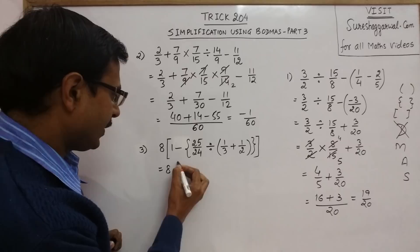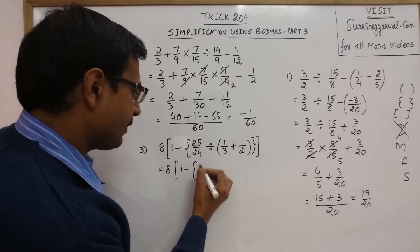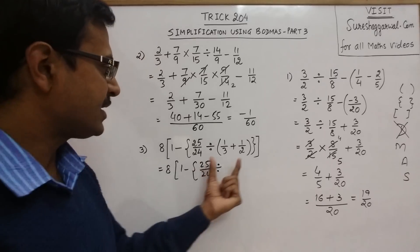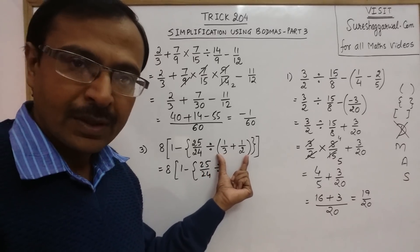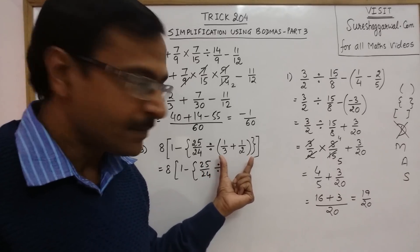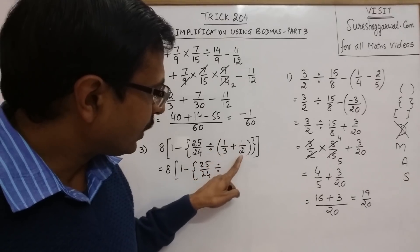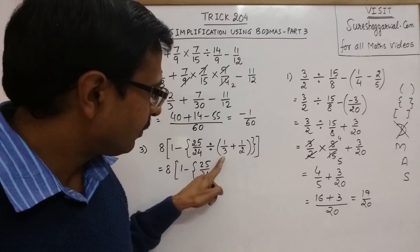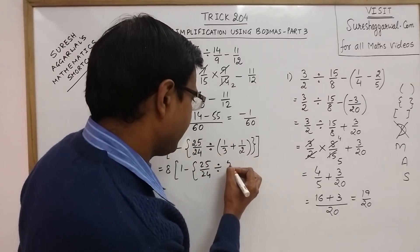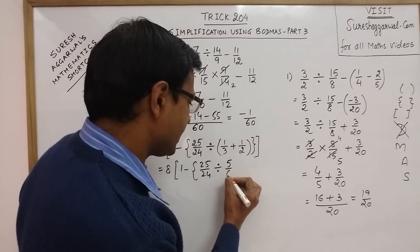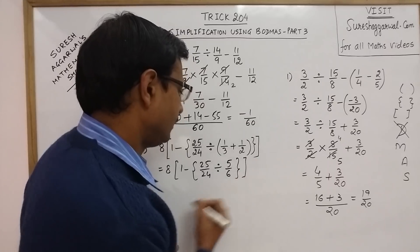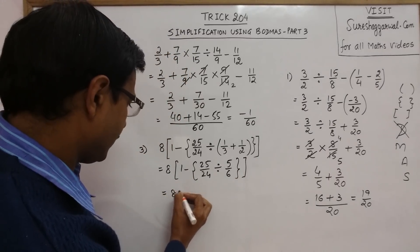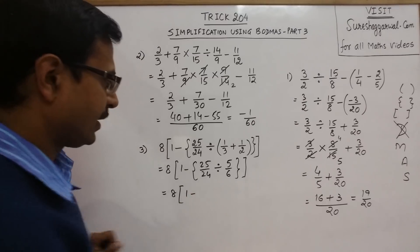8 into everything will remain same. Only thing is that we have to remove this bracket, the simple bracket first, the parenthesis. Now 1/3 plus 1/2, again 2 and 3 do not have any common factor. So 2 plus 3 is 5, and 3 into 2 is 6. One bracket is gone now.